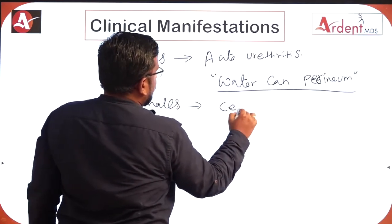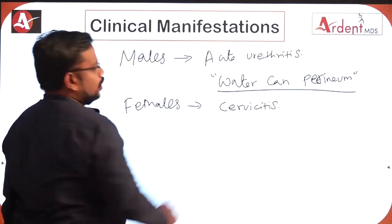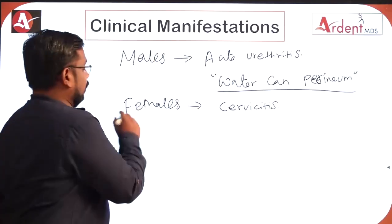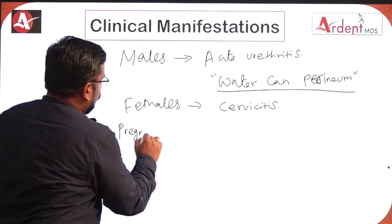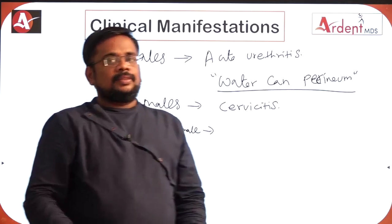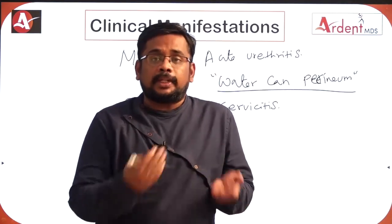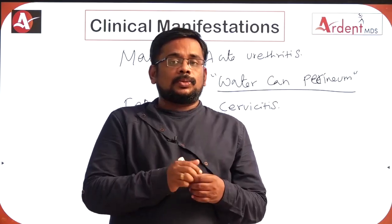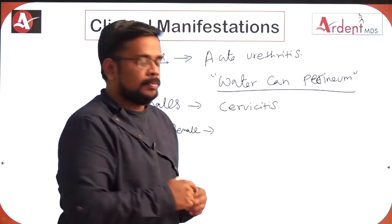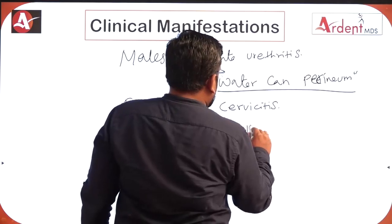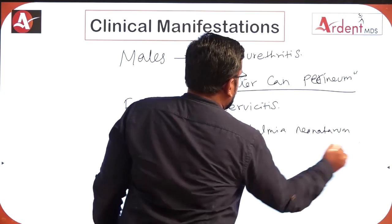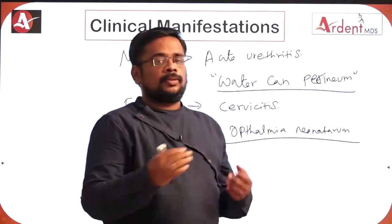The most common manifestation in females is cervicitis. In pregnant females, gonococci can be transmitted to the child during birth, leading to infection of the eye called ophthalmia neonatorum — a very important clinical manifestation for the neonate, transmitted from the mother.